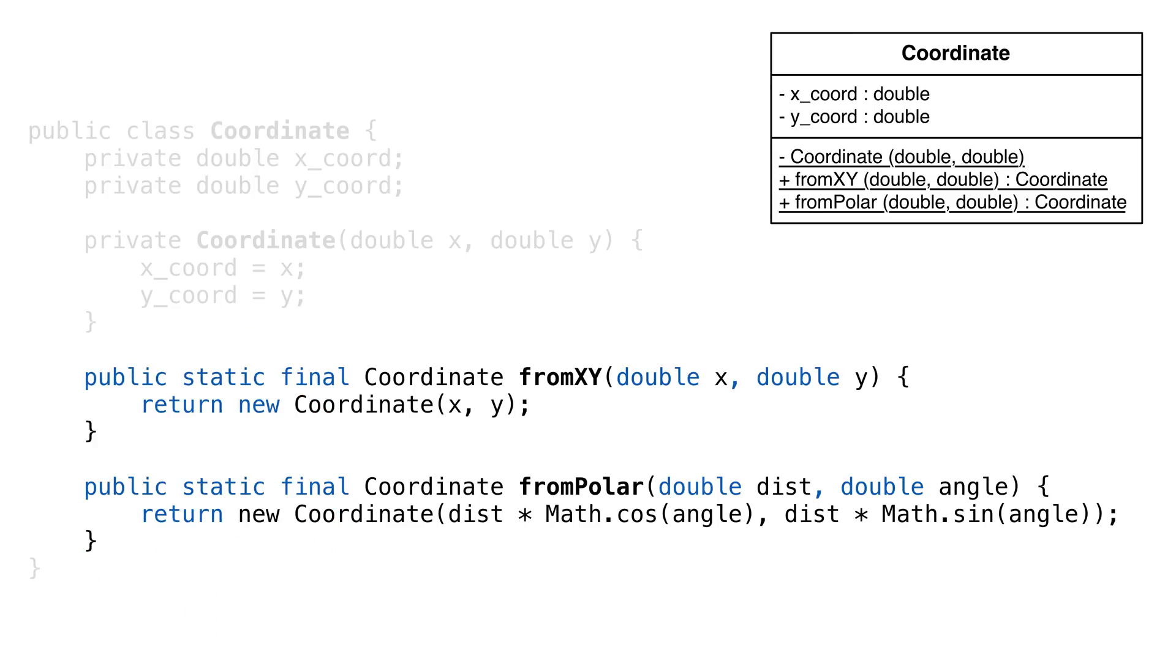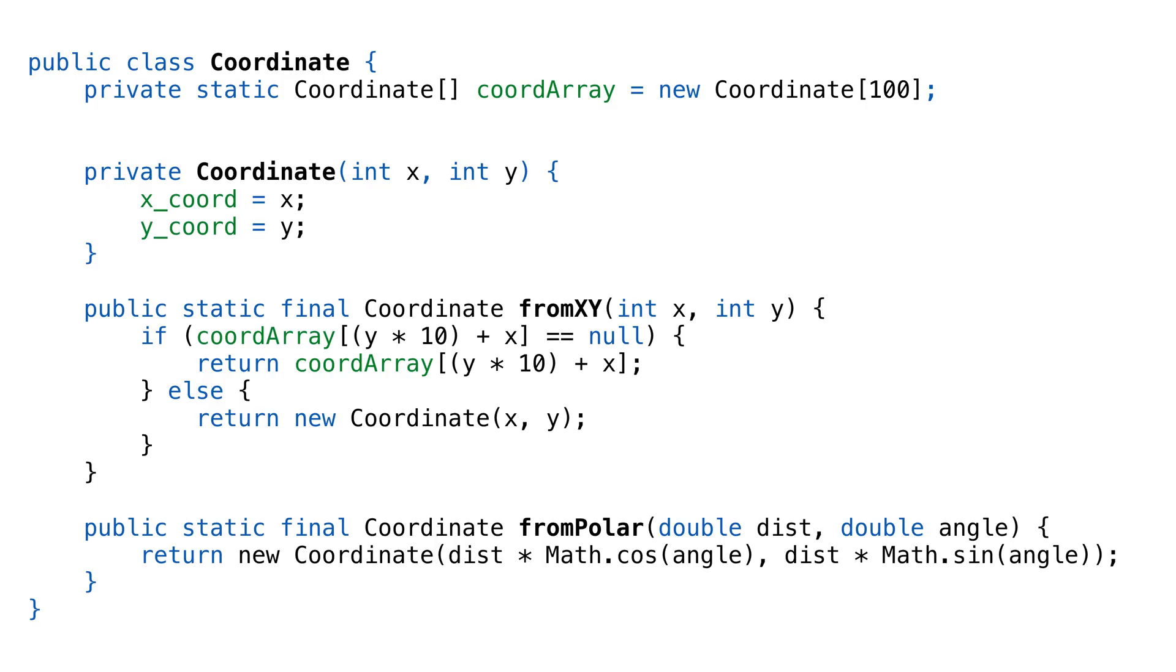Anyways, if we're returning immutable objects, we might want to return the same one. Say for example, we're using an integer coordinate system in a game that's only a 10x10. Each coordinate represents a single position in our game board that only has 100 positions. It would be wasteful to keep creating instances for the same position.